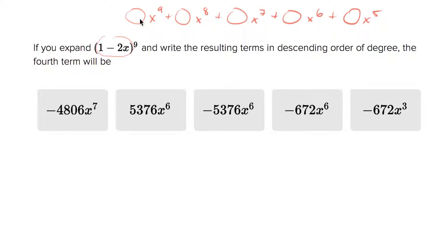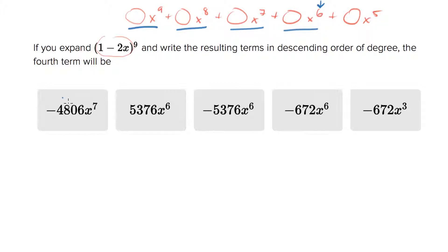They're asking what is the fourth term. You count from the left, so this is the first term, second term, third term, fourth term. Before we've even dealt with coefficients, the fourth term is degree six — it is an x to the sixth term. That should allow you to eliminate any answer choices that don't have x to the sixth, so let's get rid of the first and fifth answer choices.